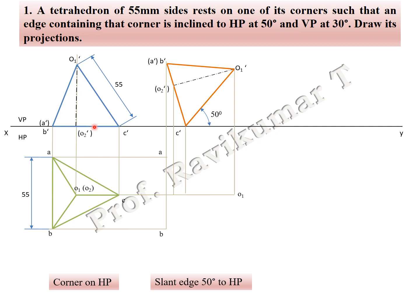Next you have to draw the projection line downward. If you are looking from the top of the object, point C is invisible. So joining from point C to any other point, you have to use invisible edges because C is invisible. The red color lines indicate the invisible edges. We have to find out whether this problem is a locus or without locus. Problems are locus when the axis is inclined to both planes. Here the edge is inclined to both planes, so it is a locus problem.